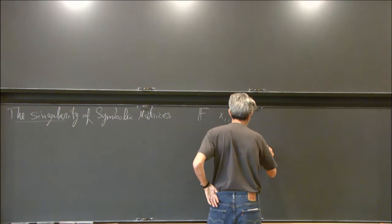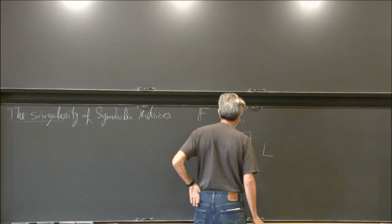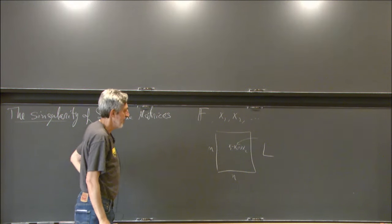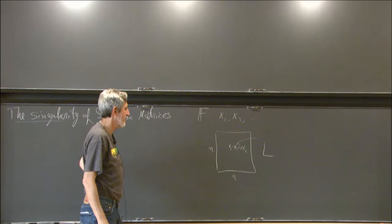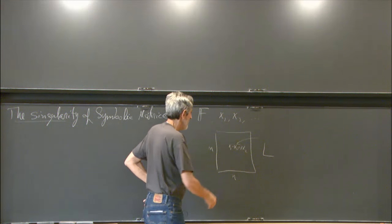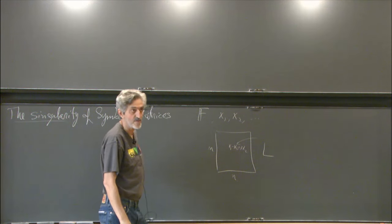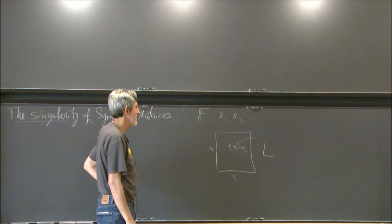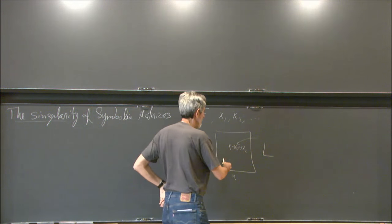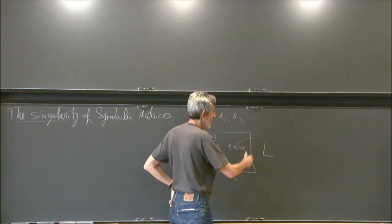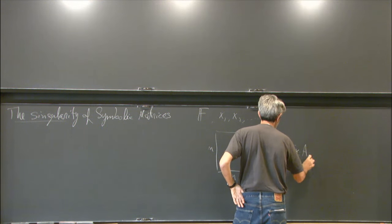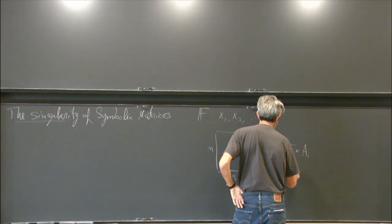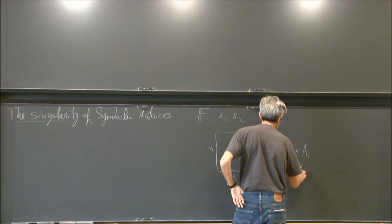Let me denote this by L. Symbolic matrices will be denoted by L. One convenient way to write it is as a linear pencil — as a sum of Xᵢ Aᵢ, where these Aᵢ's are matrices in the field.